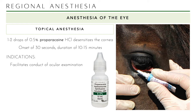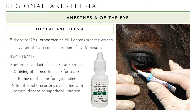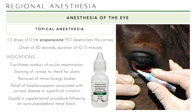Indications for topical eye anesthesia include: conducting an ocular examination when you don't want the animal to fuss; staining the cornea to check for ulcers, which is more common in horses; removing minor foreign bodies; cleaning the eye; and relieving blepharospasms associated with underlying corneal disease or superficial irritation. This is usually a supplemental procedure following a nerve block around the eye to facilitate eye manipulation.